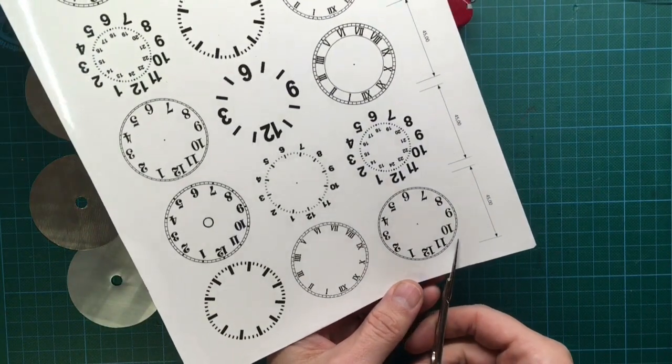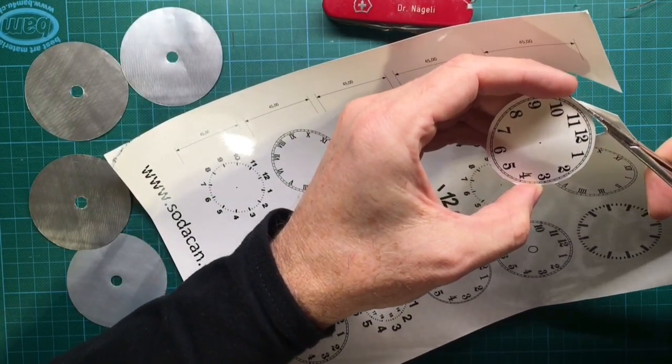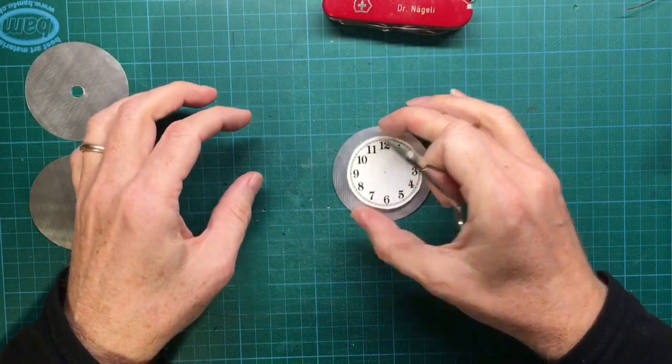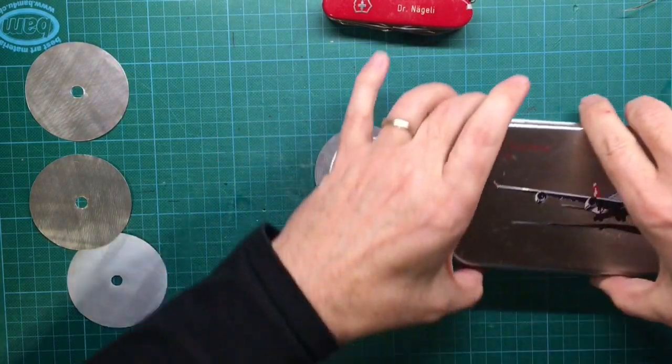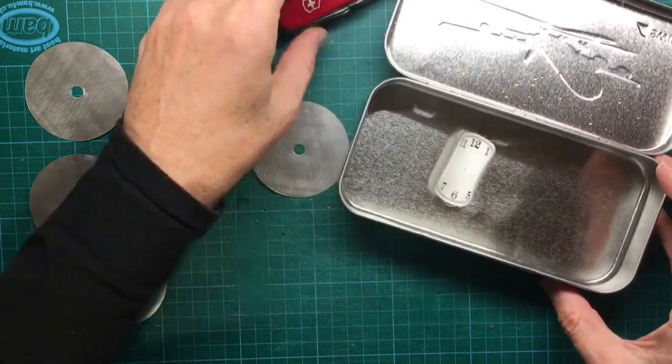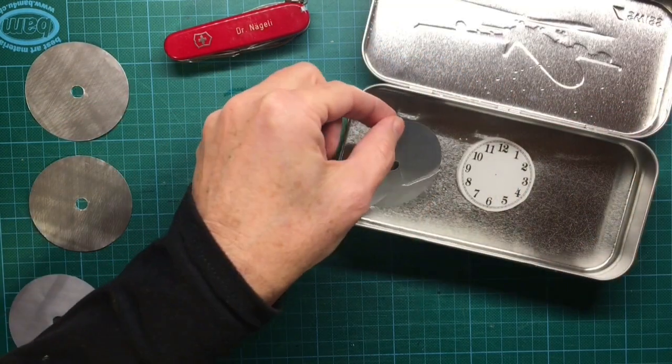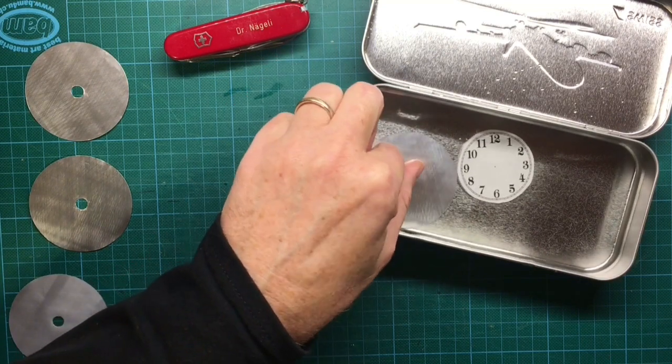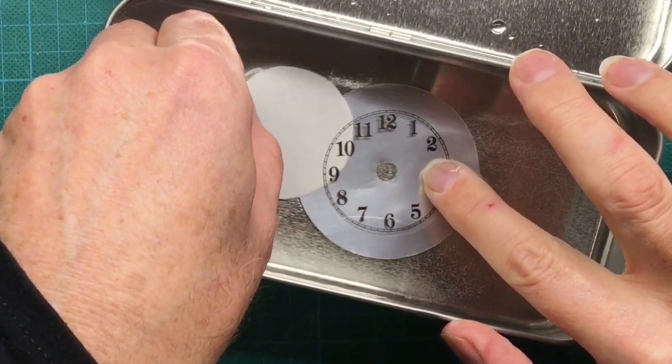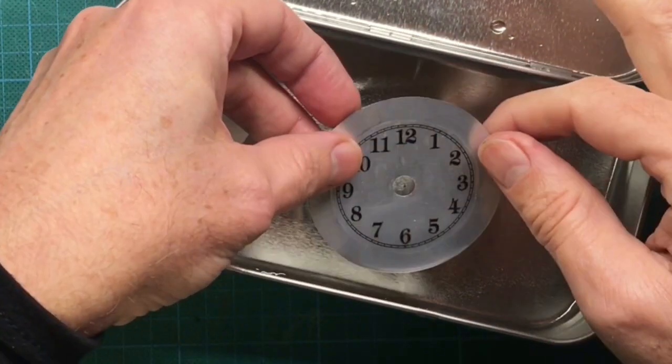Then cut out your design you want to transfer to the aluminum clock face. Place the transfer paper in a water bath and then as soon as the paper starts to separate you transfer the upper part with the clock face design to the aluminum sheet. Then carefully take out the clock face out of the water bath and remove excessive water with the tissue.